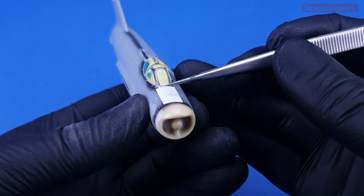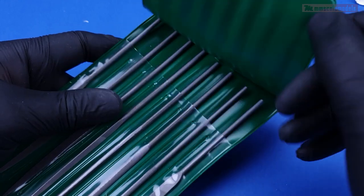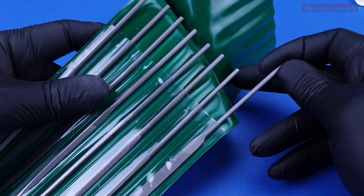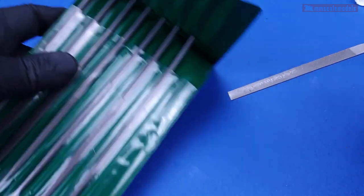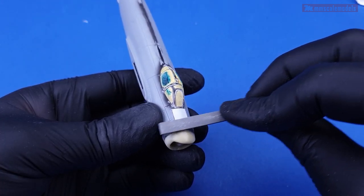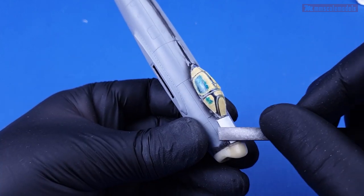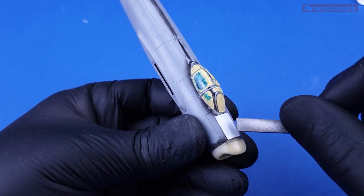To sand down the plastic a set of good quality files is essential. Recently I got a package from Hobbyzone Poland and those files were inside among other things. I will leave a link in the description should you wish to check them out. The file did a great job removing the bulk of the material in a very controllable fashion.